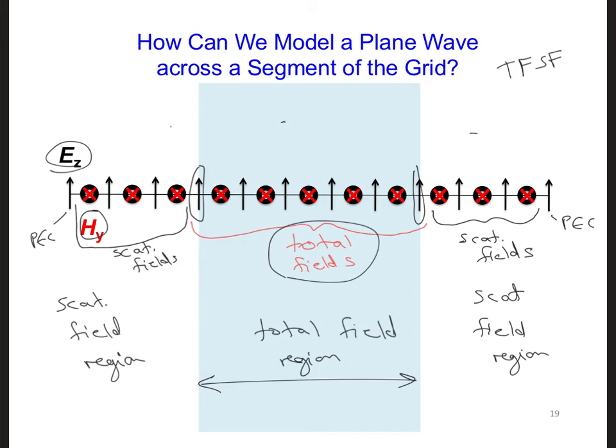Now, also right now in our one-dimensional FDTD code, we have regular updates for all the EZ and the HY components, except for the very first and last EZ components, which are PECs. Can we still implement regular updates across the entire grid after we split the grid into total and scattered field regions?